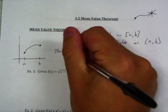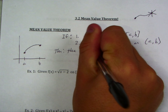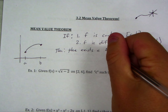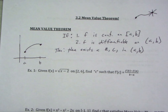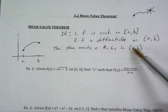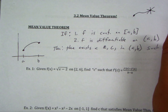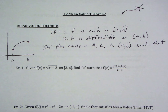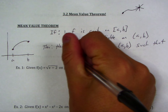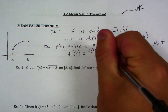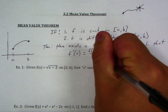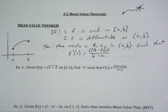Then there exists a number, and we'll call that number C, in the open interval — very similar to the intermediate value theorem. There's going to be an X value in this interval such that f prime of C equals f of B minus f of A over B minus A. Take a second to jot that down because it's really important we understand what this notation is talking about.